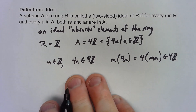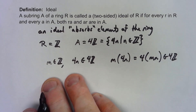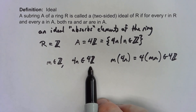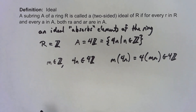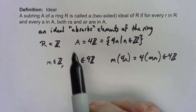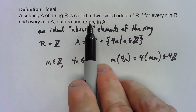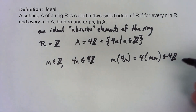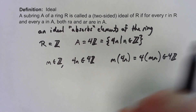The basic idea is that 4Z absorbs elements of the integers: when you take an integer times a multiple of 4 you get a multiple of 4. According to the definition we have to check both RA and AR, but in this case we've got a commutative ring so those are going to be the same thing.